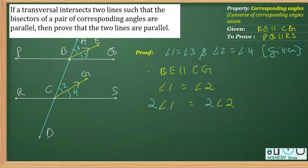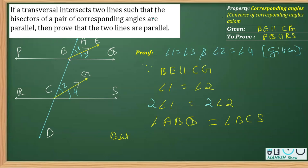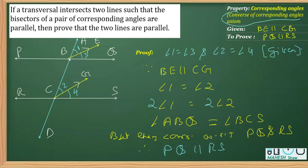Doubling them: twice angle one gives angle ABQ, and twice angle two gives angle BCS. But angle ABQ and angle BCS are corresponding angles with respect to lines PQ and RS. Therefore, PQ is parallel to RS by the converse of the corresponding angles theorem. This is how the question is solved.